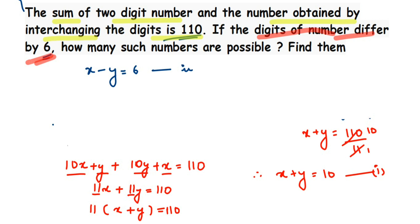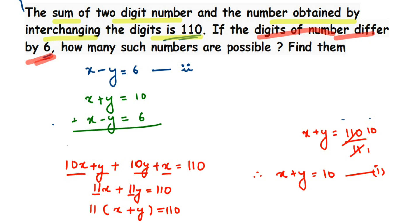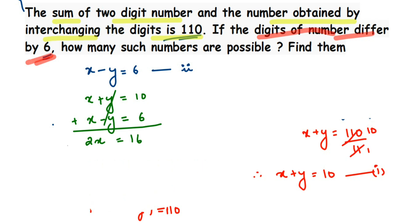Now I'm going to use these two equations. You can use any method — substitution or elimination. I'm going to use the elimination method and add the two equations: x + y = 10 and x − y = 6. When we add, x + x gives 2x, and y and −y cancel out. Then 10 + 6 = 16, so we get 2x = 16.